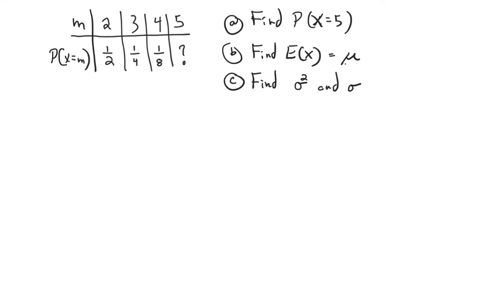Here are a couple of examples talking about expected value. I have a probability distribution given in a table — there are four possible outcomes for this random variable x: x can be 2, 3, 4, or 5. The probabilities of attaining each are respectively one half, one quarter, one eighth, and some unknown value. The first thing we want to do is find the probability that x equals 5.